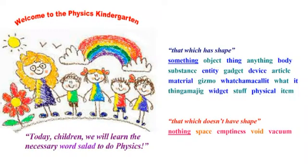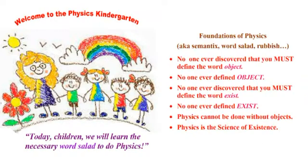There are only objects and concepts — that's it. On the other side, that which doesn't have shape has synonyms: nothing, space, emptiness, void, vacuum. The first step is to differentiate nothing from something — they are antonyms, and we can use them consistently in any exposition. When he says 'it's not an object but it's a substance,' he's contradicting himself because he never defined what an object is. As soon as you bring that up, he says 'oh you're doing semantics, word salad, word wizardry.'